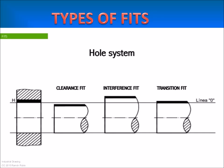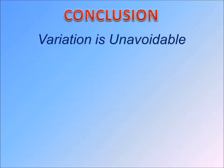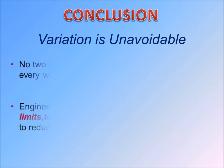Types of fits in the hole basis system are basically three types: clearance fit, interference fit and transition fit. Clearance fit has two types: sliding fit and running fit — there is a clearance between shaft and hole. Transition fit sometimes has clearance and sometimes has interference. Interference fit is required whenever a permanent assembly is needed.